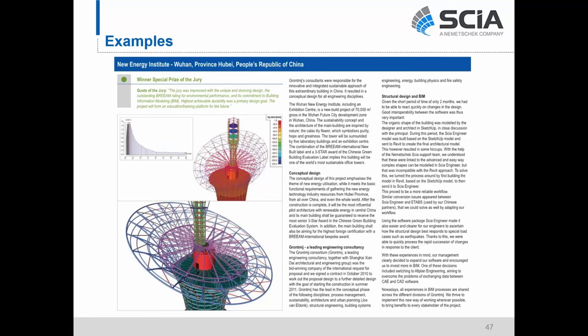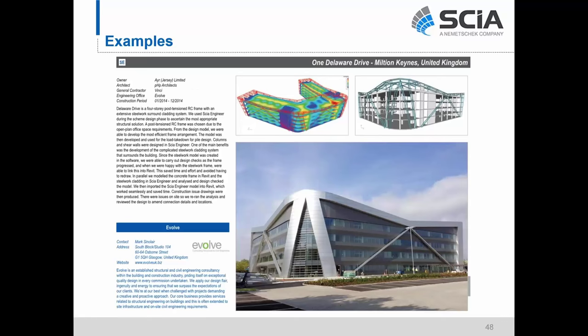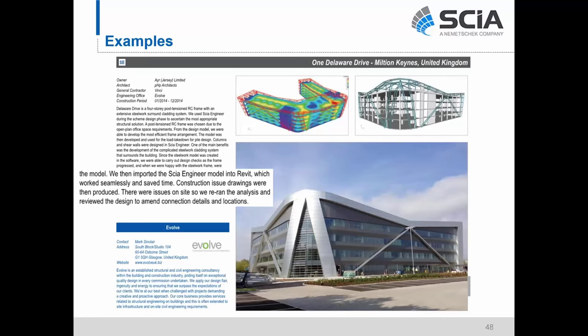In this first project — the winner of the special prize of the jury in our 2013 user contest — the company utilized the Revit model information to create an accurate structural model in C Engineer through the direct analytical link. In another building designed by Evolve in the UK, they worked in the exact opposite direction, very similar to the AECOM roof structure workflow. They were able to import the C Engineer model created by the engineers directly into Revit, which they say works seamlessly and saved them a lot of time. The engineers controlled the model in C and then the guys creating final construction documents controlled the model sent to them from C in Revit.